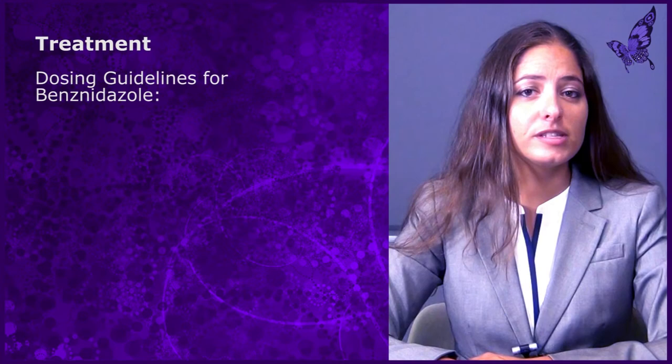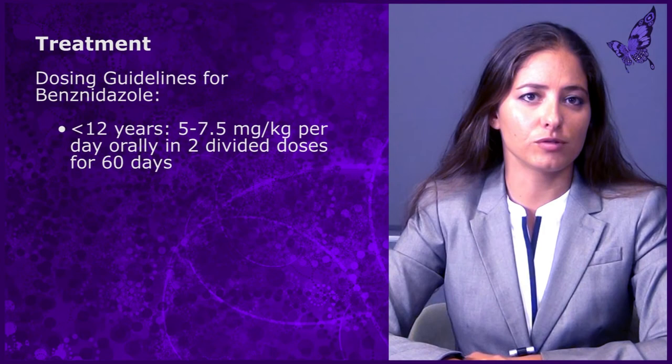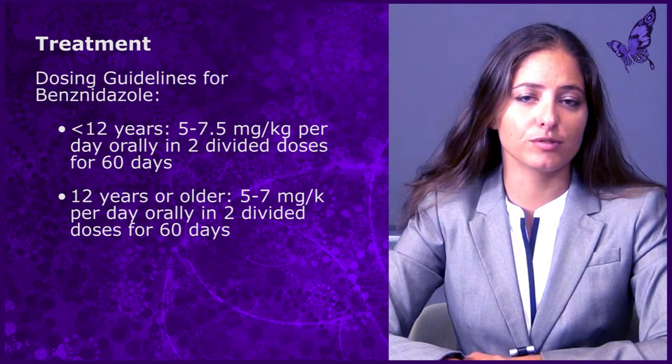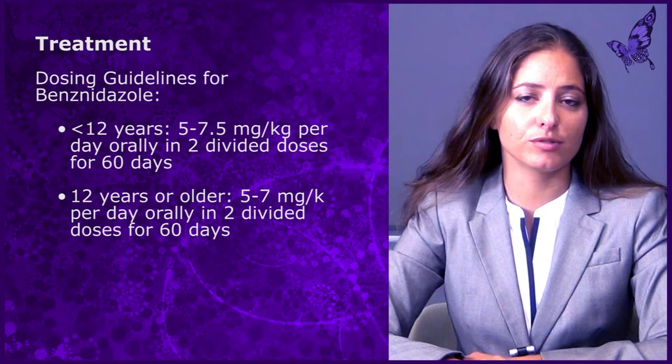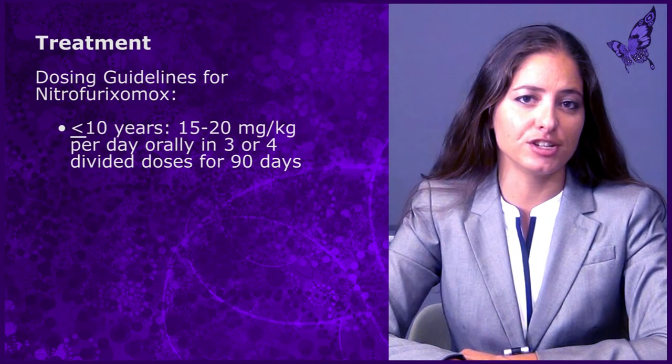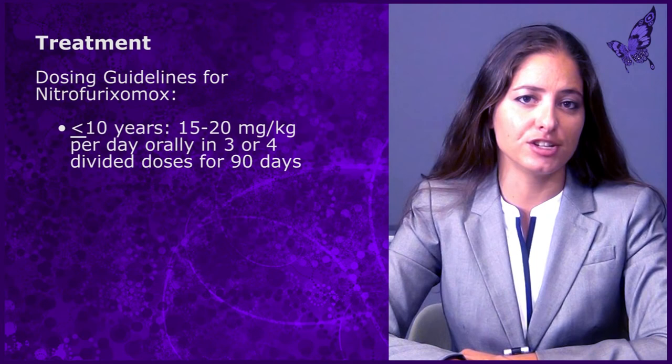Acute infection and congenital disease are medically managed with either benznidazole for 60 days or nifurtimox for 90 days. Dosing guidelines for benznidazole are as follows: for children less than 12 years old, 5 to 7.5 mg per kg per day orally in two divided doses for 60 days. For children 12 years or older, the dosing is 5 to 7 mg per kg per day orally in two divided doses for 60 days. For nifurtimox, children less than or equal to 10 years of age receive 15 to 20 mg per kg per day orally in three or four divided doses for 90 days.